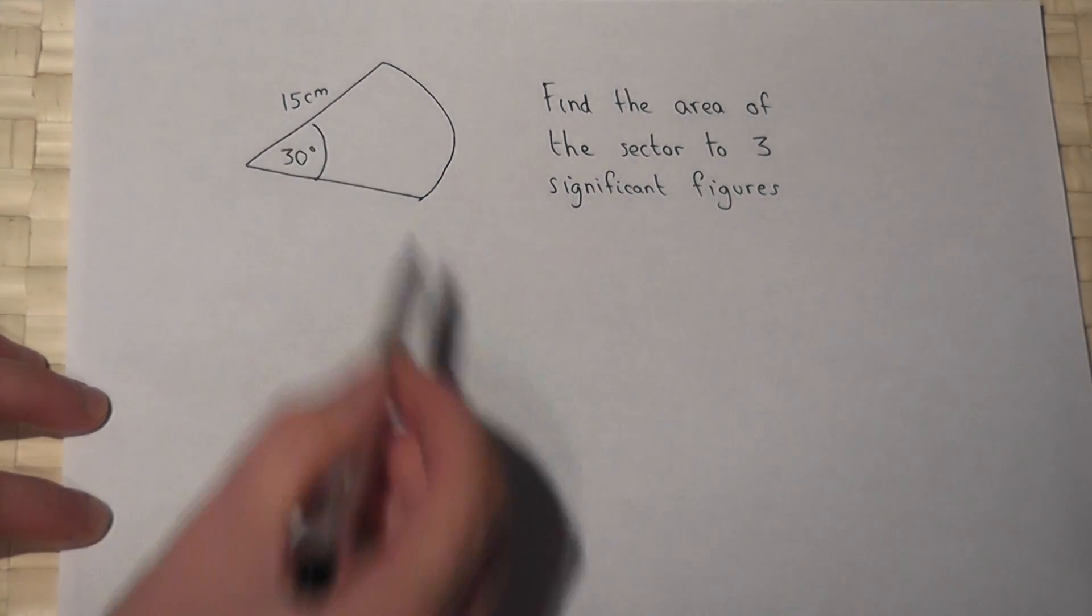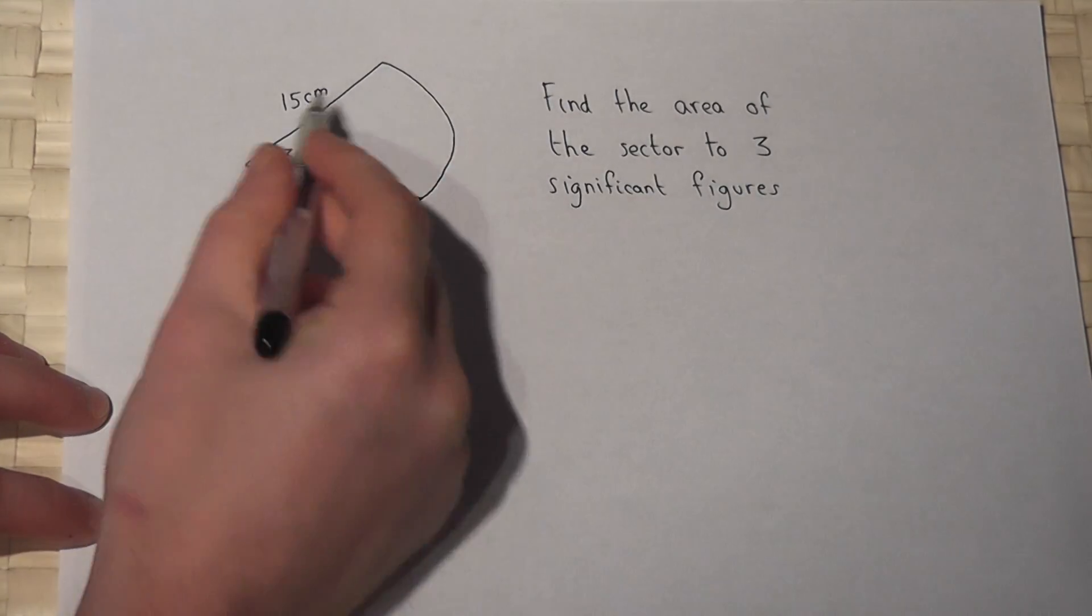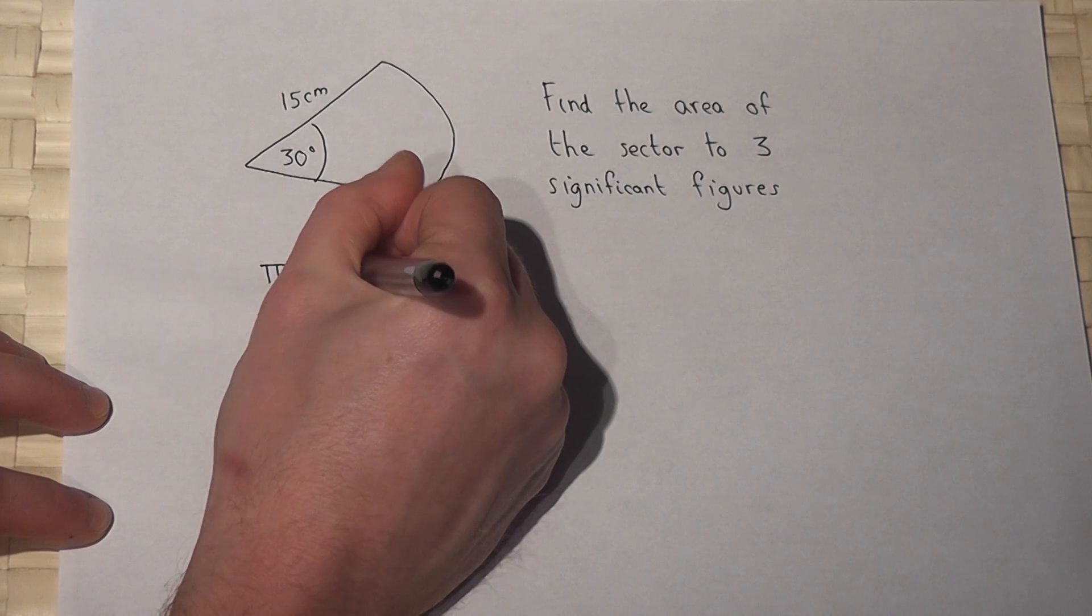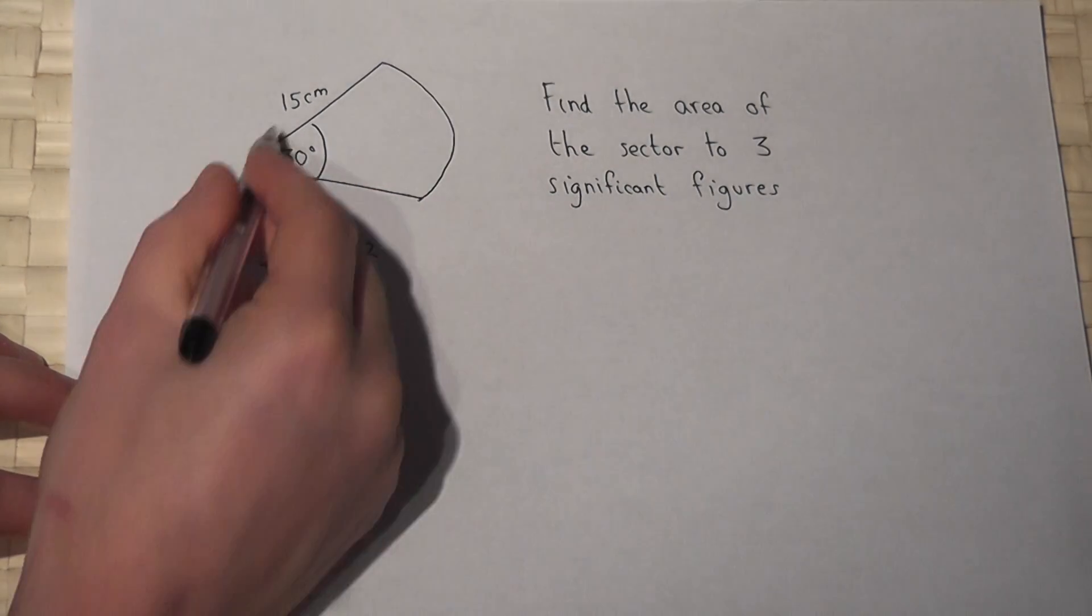Now if this was a full circle then we know it would be pi times r squared. Well r is 15 so the full circle would be pi times 15 squared.